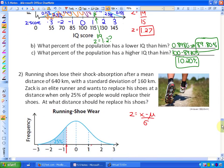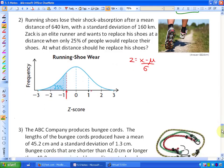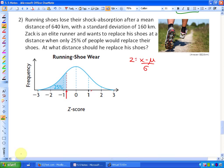All right, we're going to do one more question. Number two says running shoes lose their shock absorption after a mean distance of 640 kilometers. So if I was to place this data on here, running shoes lose their shock absorption after 640 kilometers with a standard deviation of 160. So if I went up by 160s, that would be roughly like this, and down by 160s would be roughly like this. That's what the shoes look like, and above it is the z-scores.